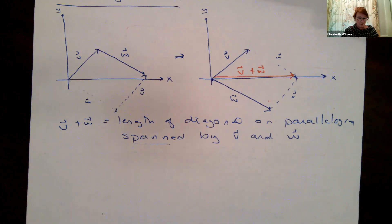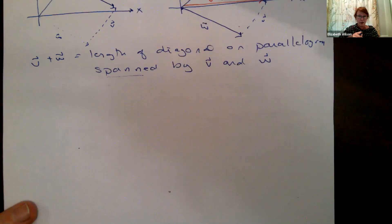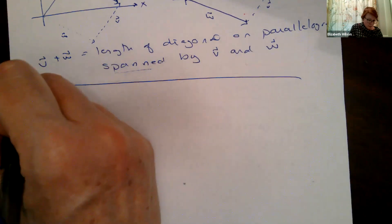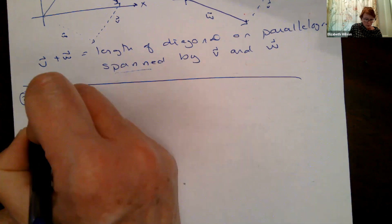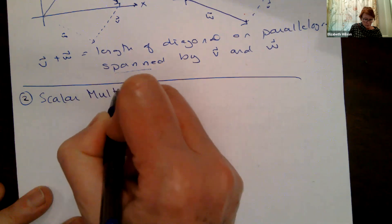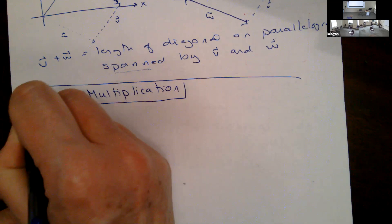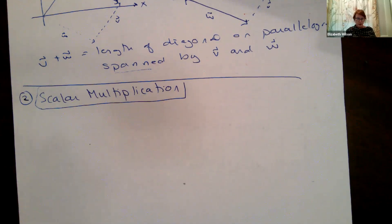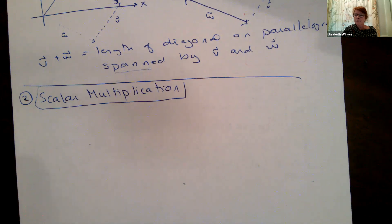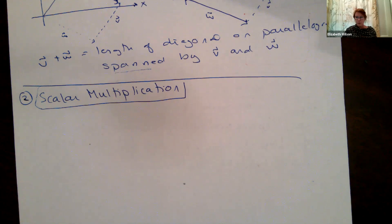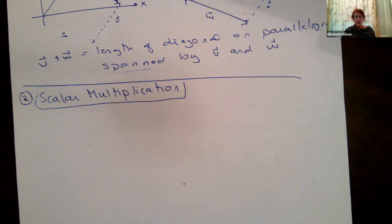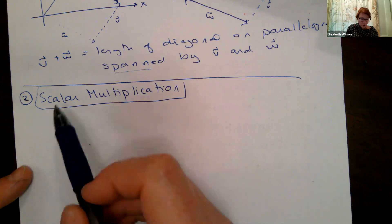Another mathematical property is scalar multiplication. While a vector has magnitude and direction, a scalar is just a number — like three, zero, pi, or any particular number. When we talk about operations on vectors, we can add and subtract, we can multiply by scalars, and we can also multiply two vectors with each other, which we'll cover in later chapters. For today, we're just going to talk about scalar multiplication.